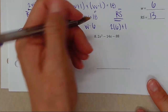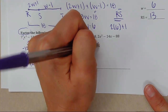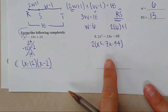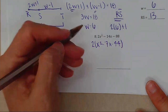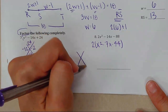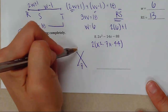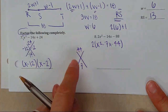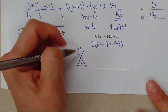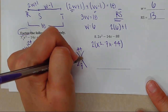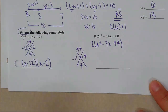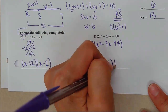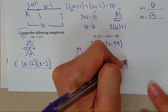For the next one, there is a GCF. After factoring it out, we get x² − 7x − 44. Using the X-factor method: negative 7 on the bottom, negative 44 on top — what multiplies to negative 44 and adds to negative 7 is negative 11 and positive 4. The answer is 2(x − 11)(x + 4).